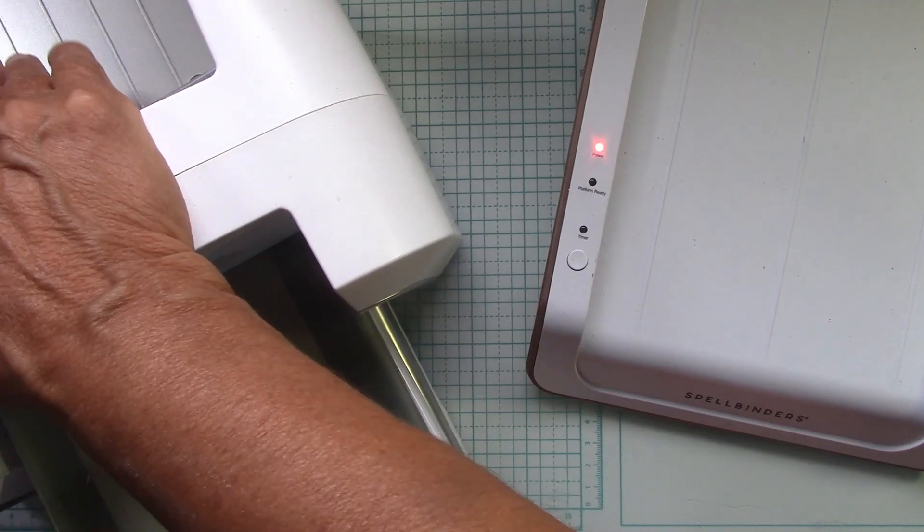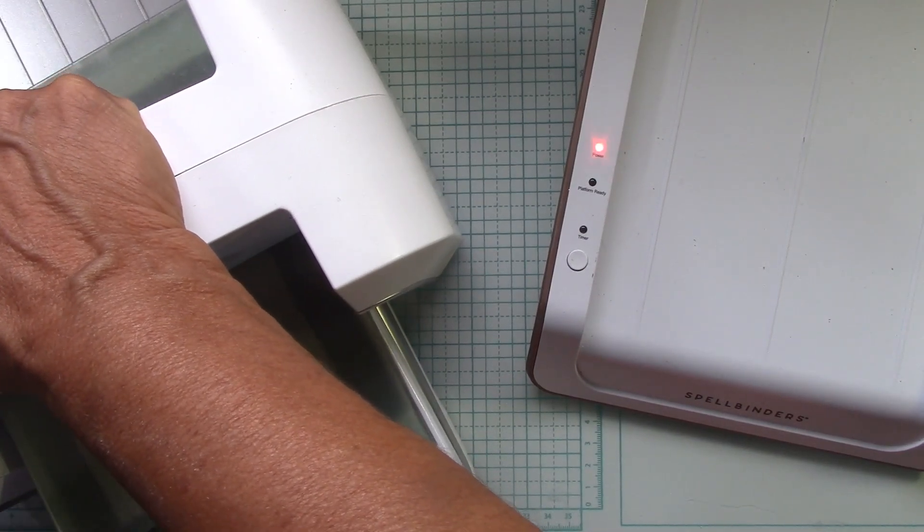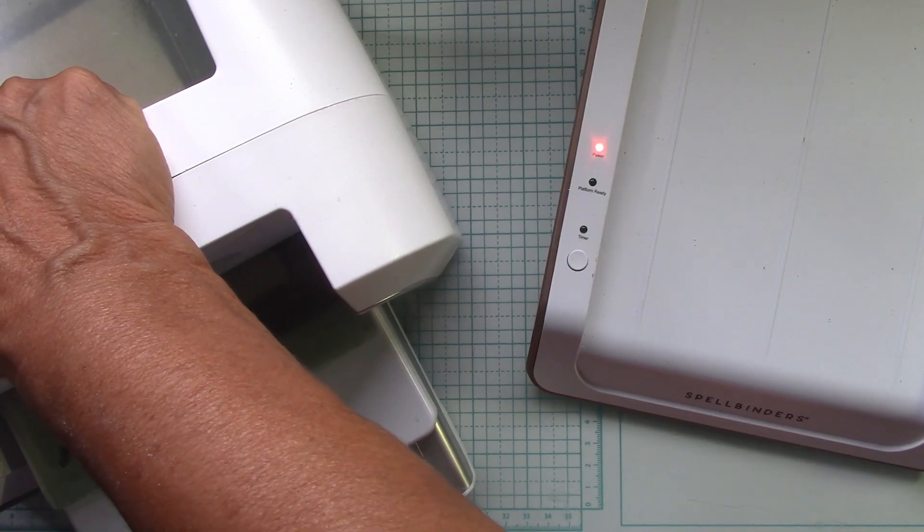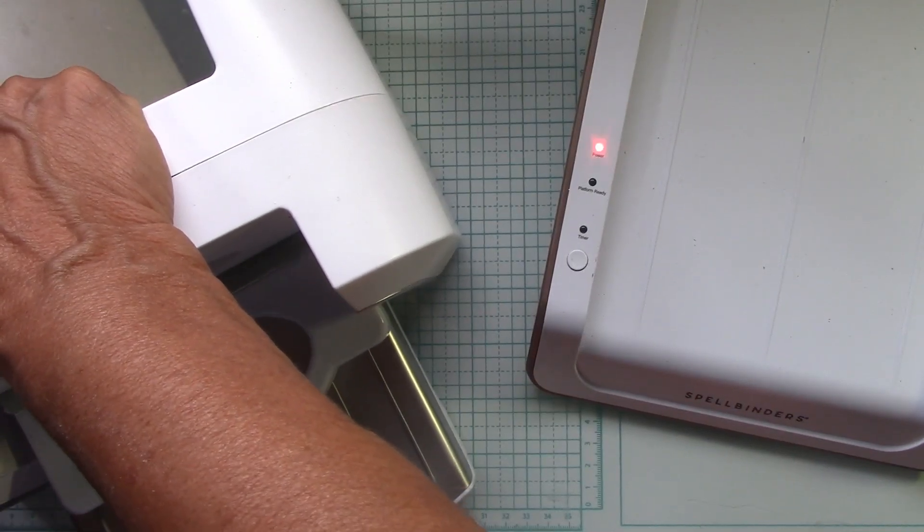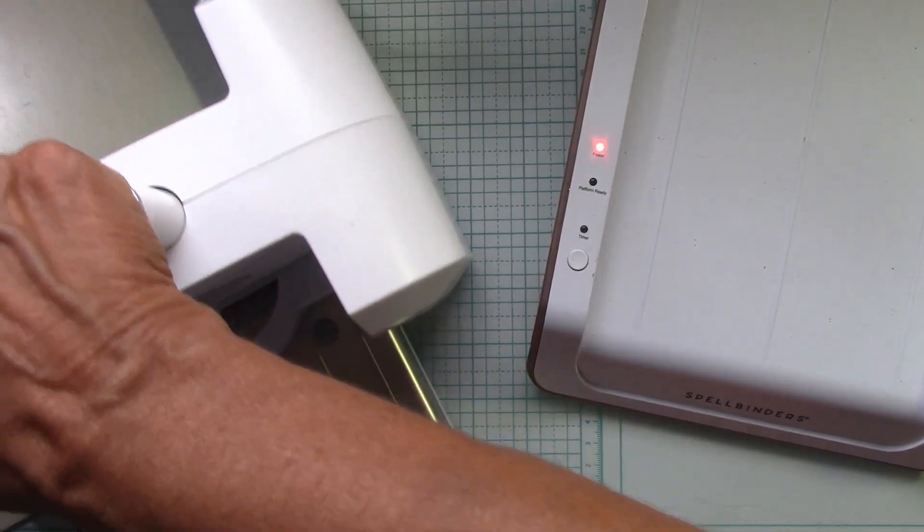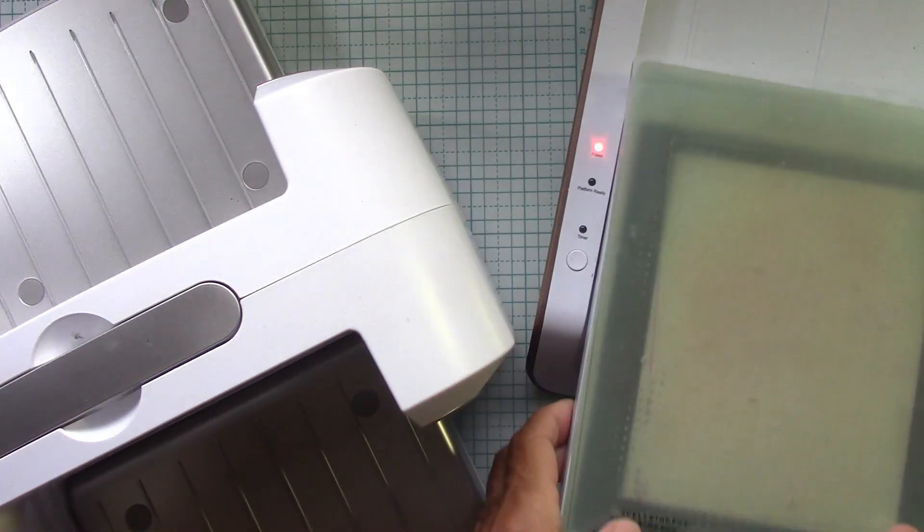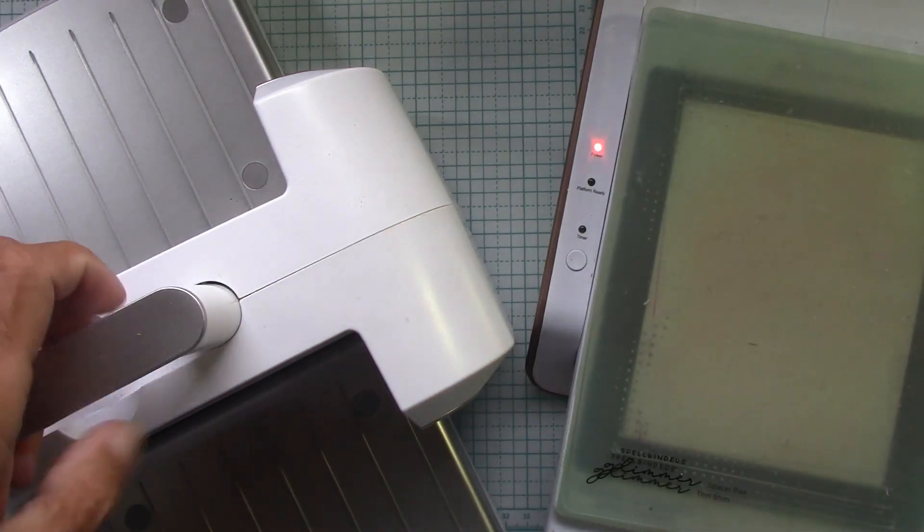Now some people need to use a shim, some people go back and forth. When we do the reverse foil I will go back and forth, but when we do this I just go through once. I'm going to move this for right now.